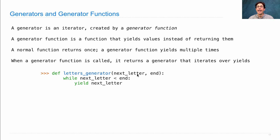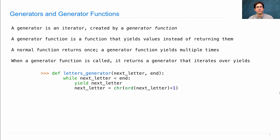So if we passed in A and E, we'd first yield A. Then we're going to rebind next letter to be the letter after whatever it is currently. All of this happens inside a while statement, which means these lines will be executed multiple times. A return statement could only possibly be executed once, but yield is special — you can yield multiple times, for instance, within the suite of a while.